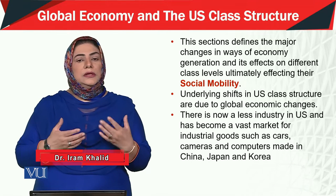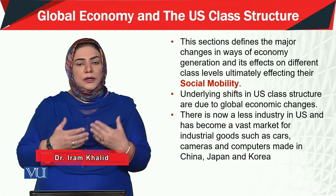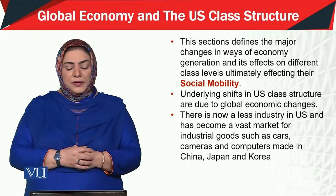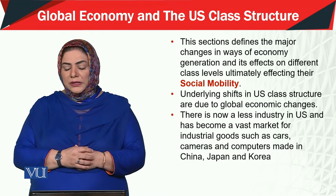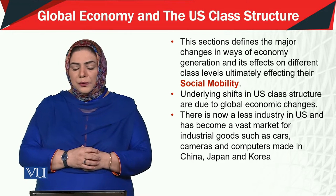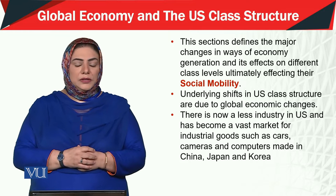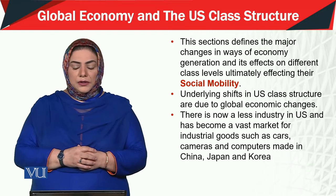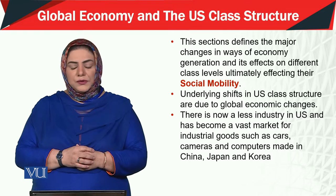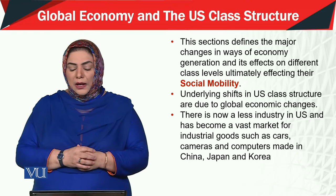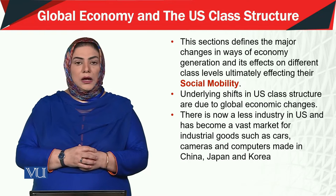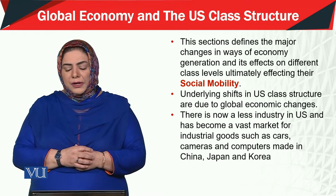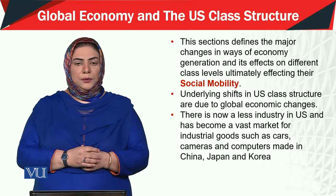Bohut sare loogon ki zindagiyon mein behteri aur improvement aati hai — many people's lives see improvement and betterment. The shift in US class structure is due to global economic changes. There is now less industry in the US, and it has become a vast market for industrial goods such as cars, cameras, and computers made in China, Japan, and Korea.